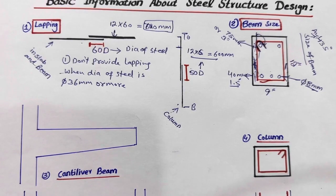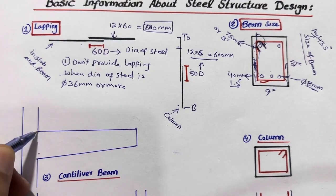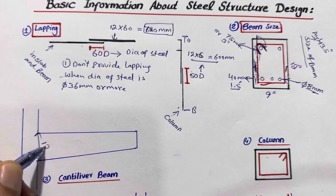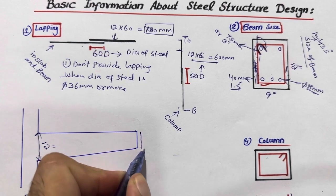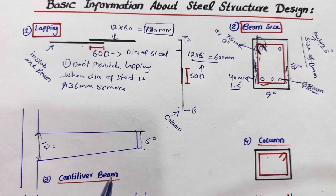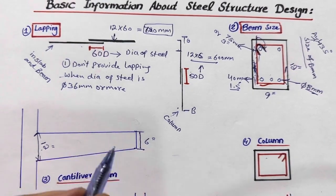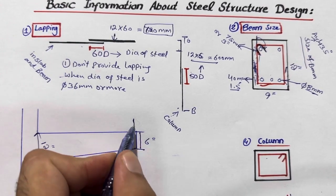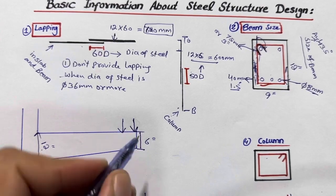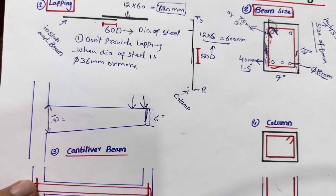For a cantilever beam, the fixed end should have the maximum depth — for example, about 12 inches. The free end should not be more than 6 inches. You can decrease the depth at the free end but not increase it. A slope should be provided because overloading at the free end must be avoided, and the depth at the free end must remain less than at the fixed end.